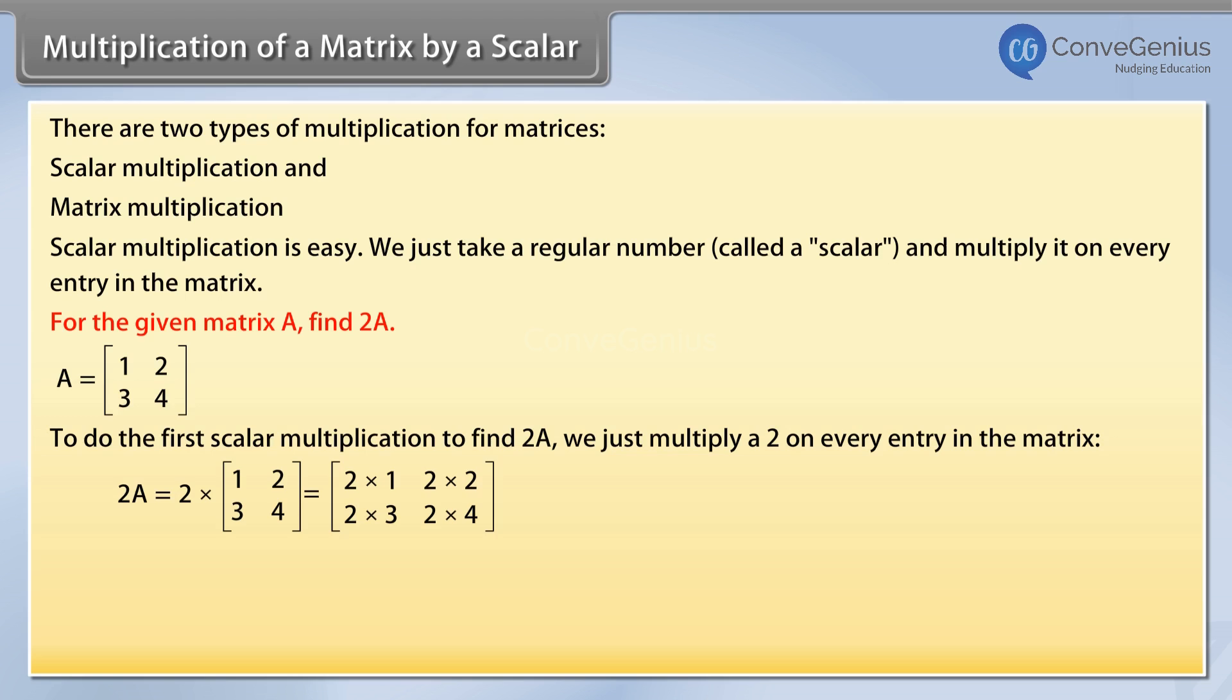first row 2 times 1, 2 times 2; second row 2 times 3, 2 times 4, which equals the matrix, row-wise: